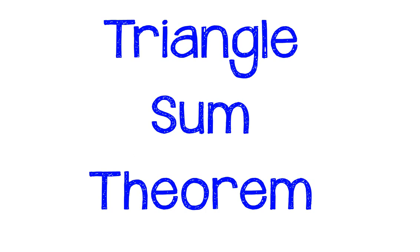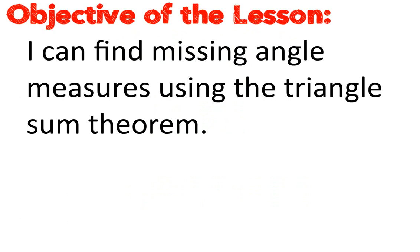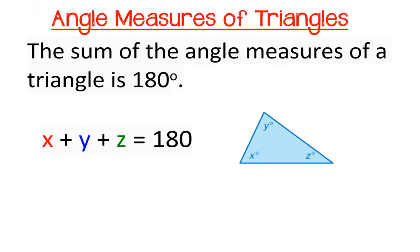In this tutorial, we'll learn how to use the triangle sum theorem to find missing angle measures in a triangle. By the end of this lesson, you should be able to say that you can find missing angle measures using the triangle sum theorem. So what is the triangle sum theorem? It states that the sum of the angle measures of a triangle is always equal to 180 degrees.